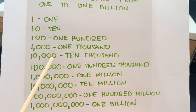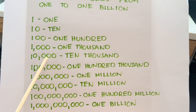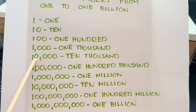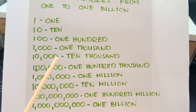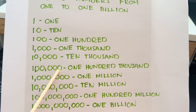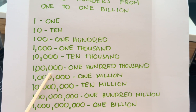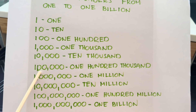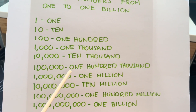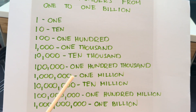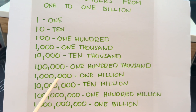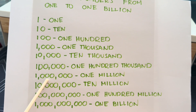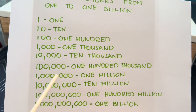Next, we have 1, 2, 3, 4 zeros in 10,000. We have 1, 2, 3, 4, 5 zeros in 100,000. There are 1, 2, 3, 4, 5, 6 zeros in 1,000,000.